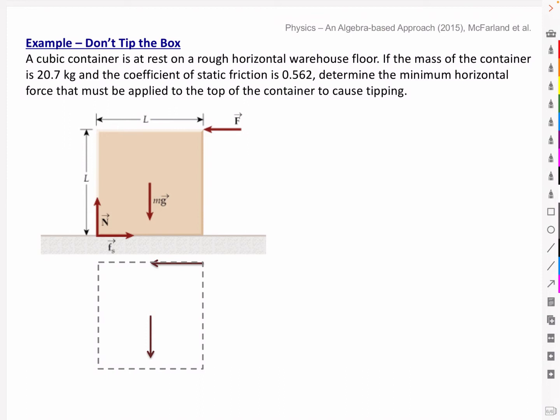A cubic container is at rest on a rough horizontal warehouse floor. If the mass of the container is 20.7 kilograms and the coefficient of static friction is 0.562, determine the minimum horizontal force that must be applied to the top of the container to cause tipping. So the information we have is that the mass of the box equals 20.7 kilograms and the coefficient of static friction equals 0.562.